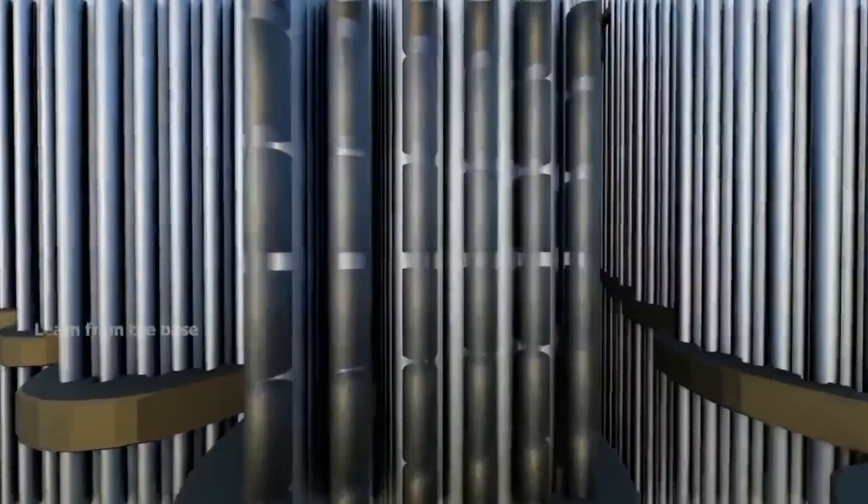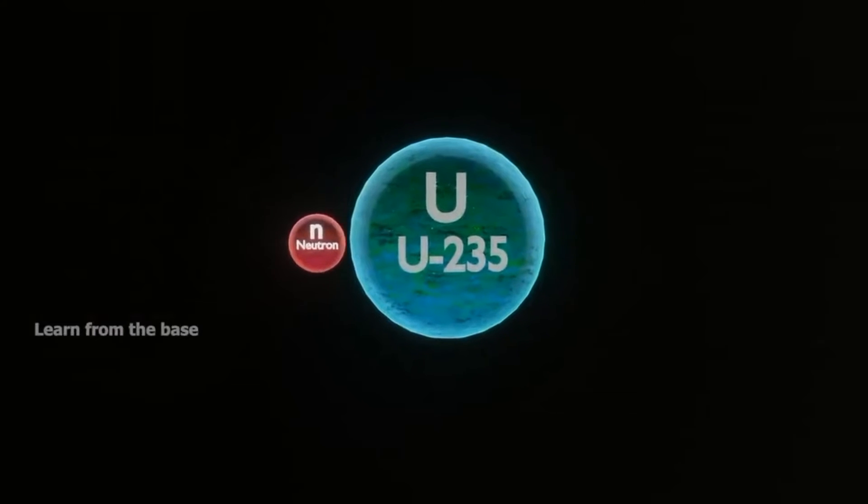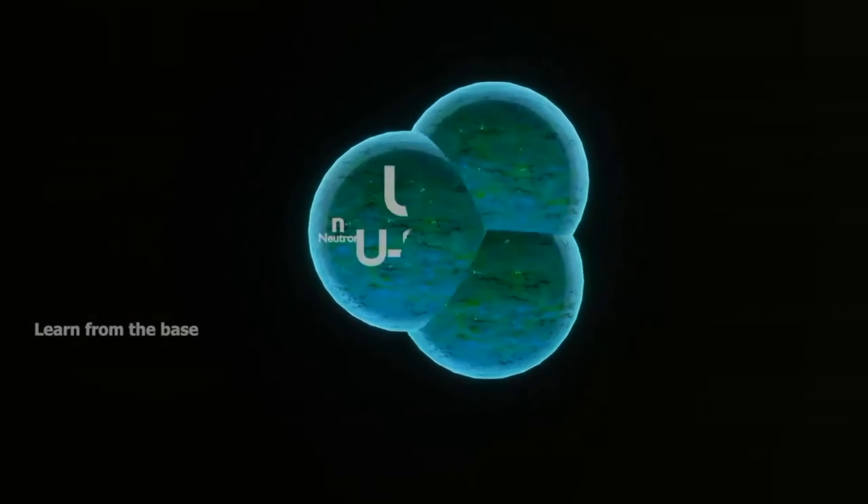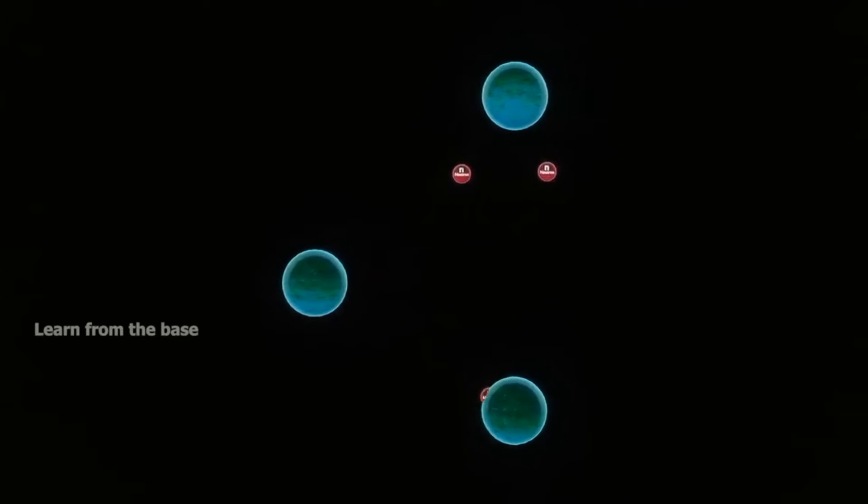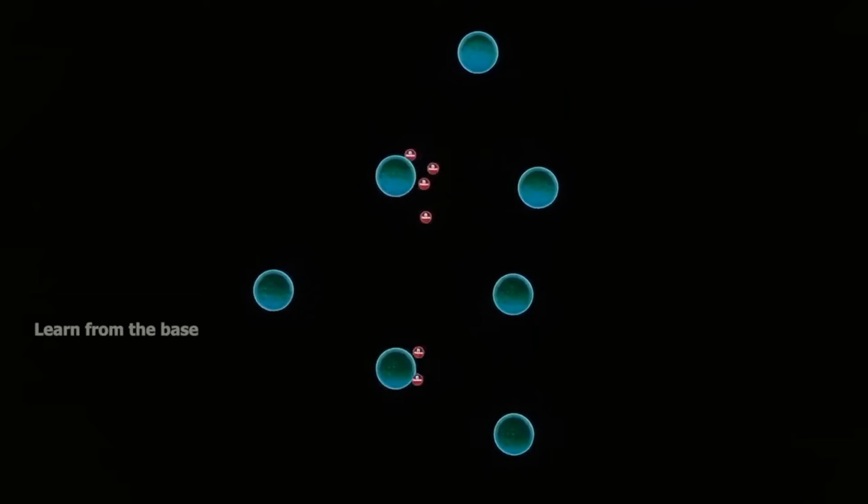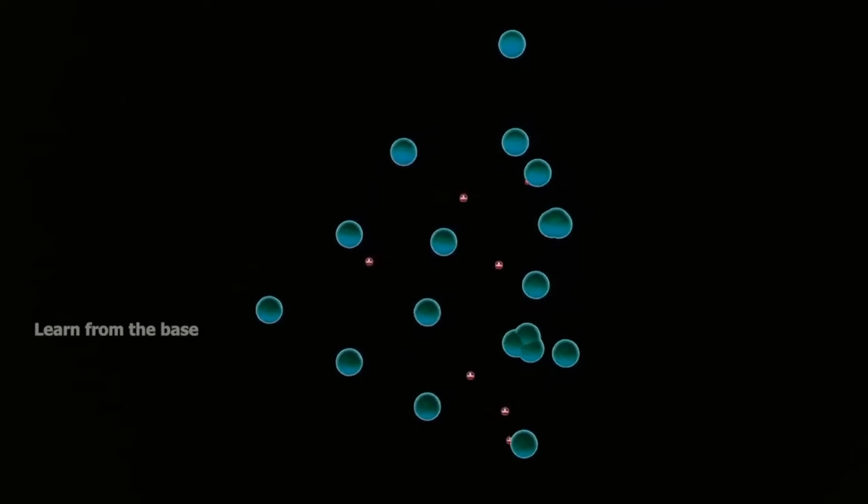The energy production process begins with the fission of uranium atoms inside the reactor core. When the nucleus of a uranium atom is hit by a neutron, it splits into two and releases two or three additional neutrons. The fission process often produces gamma photons and releases a very large amount of energy.